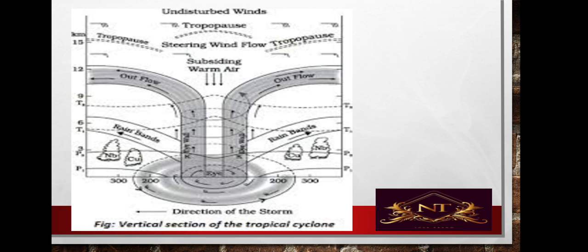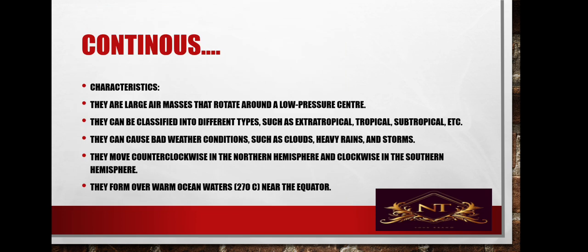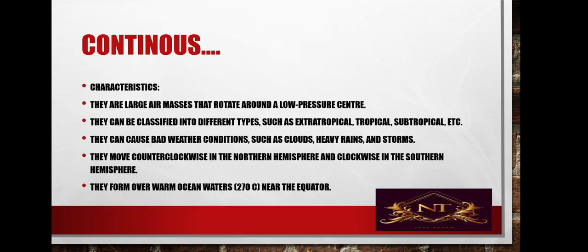Around the eye there is a rain band where heavy rainfall takes place. Regarding its characteristics, a cyclone is basically a low pressure area, categorized as tropical and sub-tropical cyclones, resulting in clouds, heavy rain, and storms.